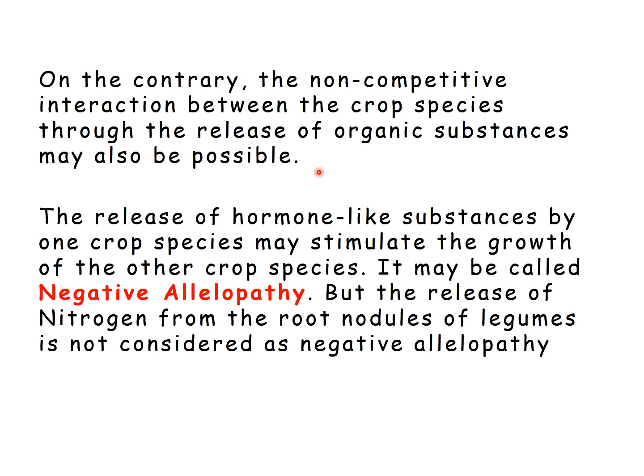The release of hormone-like substances by one crop species may stimulate the growth of another crop species. While allelopathy is harmful to crops, this beneficial chemical release may be called negative allelopathy. However, the release of nitrogen from the root nodules of legumes is not considered as negative allelopathy — that is a different concept. Negative allelopathy specifically refers to organic hormone-like substances released by plants that are beneficial to other species.